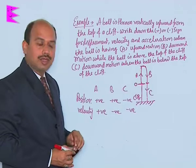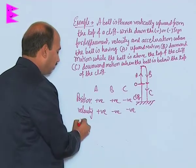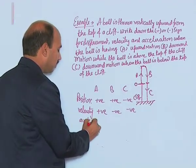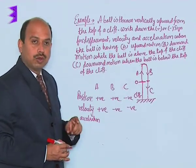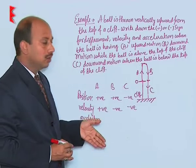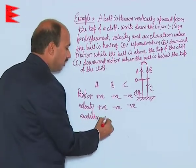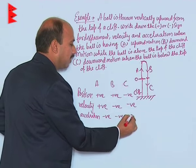In both cases velocity is negative. But what about acceleration? Since the body is going up and acceleration due to gravity is acting on the body, it is always vertically downward. So we write in all cases it is negative, negative, and negative.